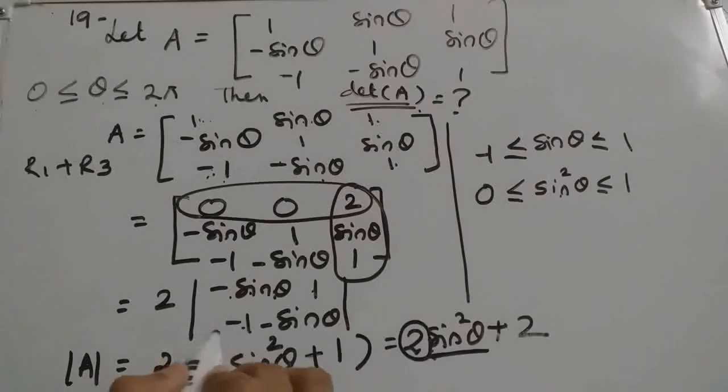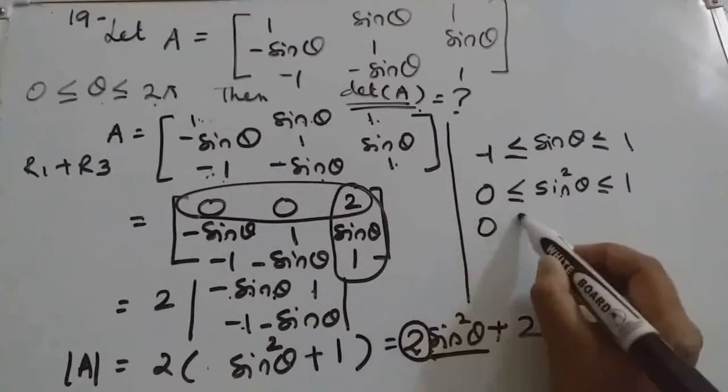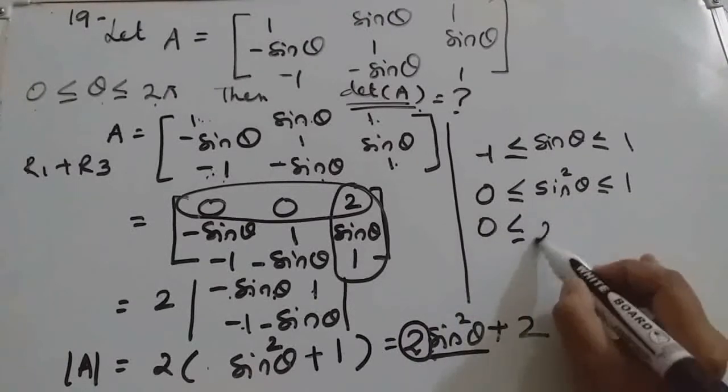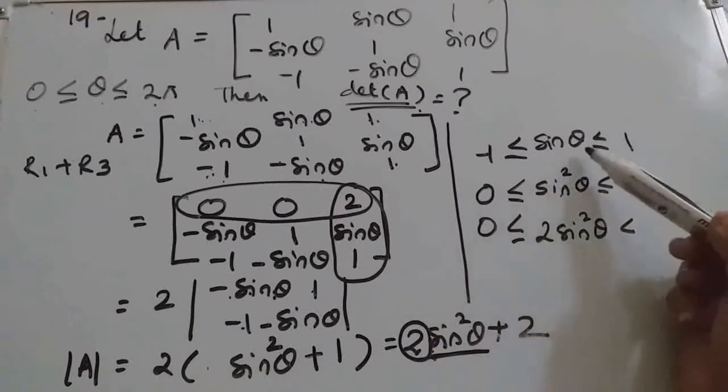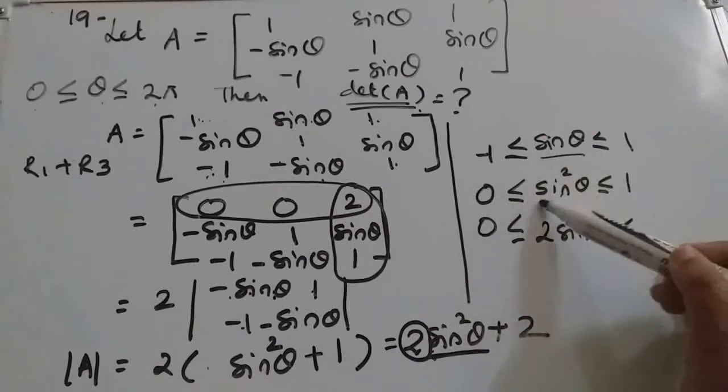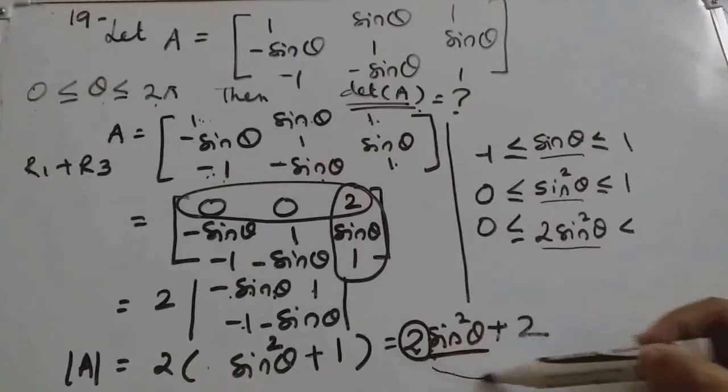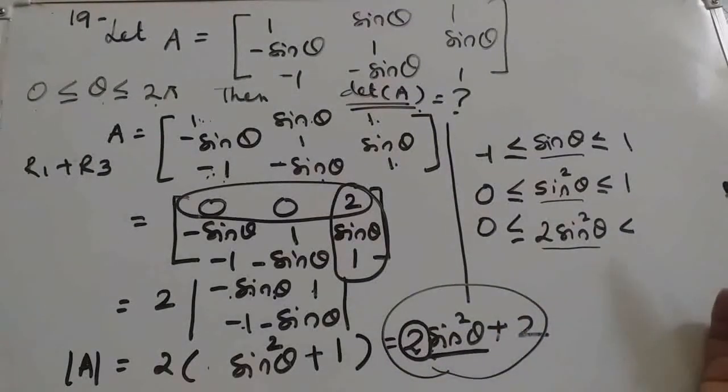Now after that we should multiply throughout with 2. So we will get 0. Then 2 sin square theta. See what is our aim? We are making this middle expression as determinant A expression. And 2 times 1 is 2 here.